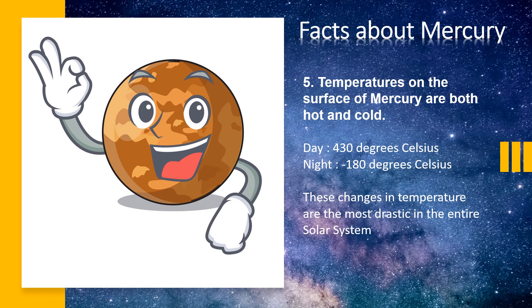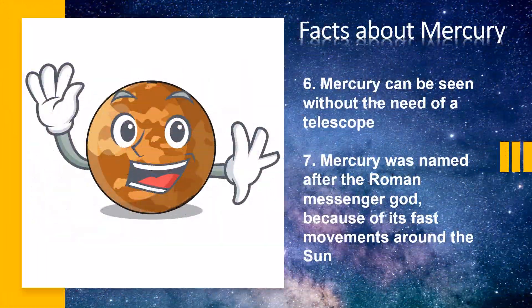The temperatures on the surface of Mercury are both hot and cold. During the day it is 430 degrees Celsius; at night it is minus 180 degrees Celsius. These changes in temperature are the most drastic in the entire solar system. Mercury can be seen without a telescope — we can even see it with the naked eye. Mercury was named after the Roman messenger god because of its fast movements around the sun.